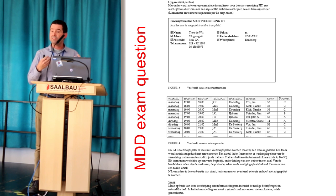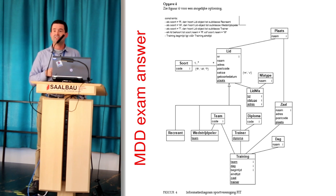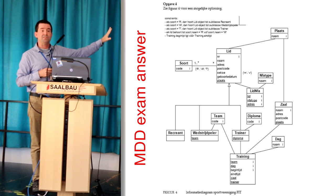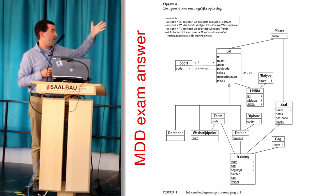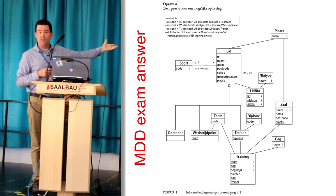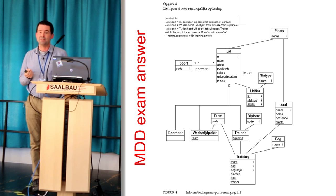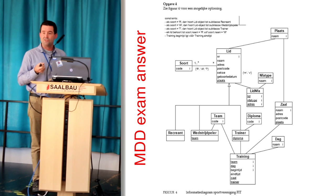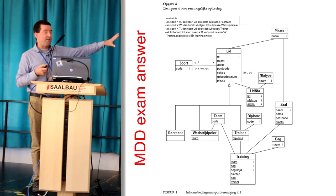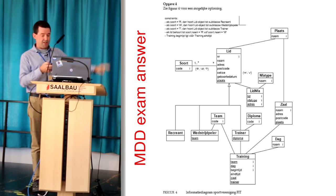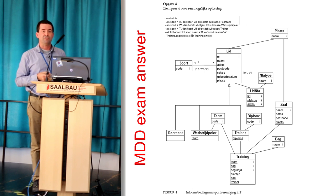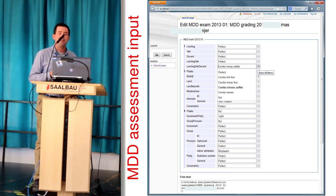Students get a question with a given case study — a situation they need to implement with some sample paper data. We as assessors have the answer we think is most appropriate. Then we look at 30 to 50 different sheets of paper with sketches students have made. When I started with this course, teachers would print out a sheet, draw circles all over it saying 'this is five points, this is ten points,' mark up 50 sheets of paper, enter it all in a spreadsheet, and throw the paper away. But I thought I work with Semantic Media Wiki, and maybe I can make this easier.